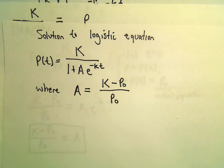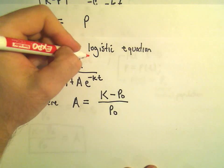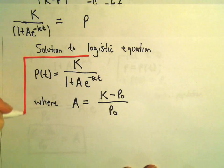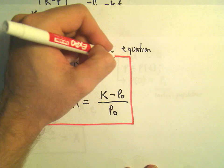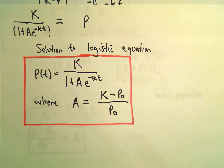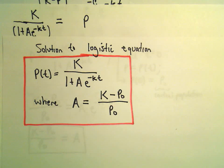We've now got an explicit solution to our logistic equation: p of t equals capital K over 1 plus A times e to the negative kt, where A equals K minus p-sub-zero over p-sub-zero. You'll have to deduce the constant of proportionality k in an actual problem — sometimes they give it to you, but typically not.